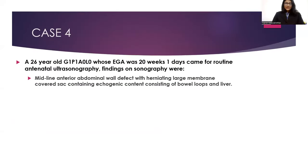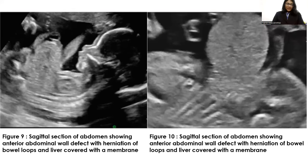My fourth case: a 26-year-old G1P1A0L0 with an estimated gestational age of 20 weeks and 1 day came for routine antenatal ultrasonography. Findings on sonography were a midline anterior abdominal wall defect with a herniating large membrane-covered sac containing bowel loops and liver. Images show a sagittal section of the abdomen demonstrating the anterior abdominal wall defect with herniation of bowel loops and liver, with the umbilical cord attached to the sac.